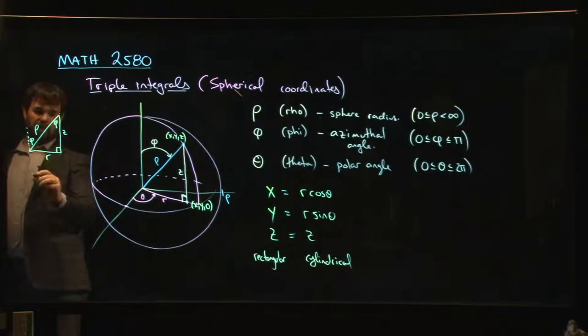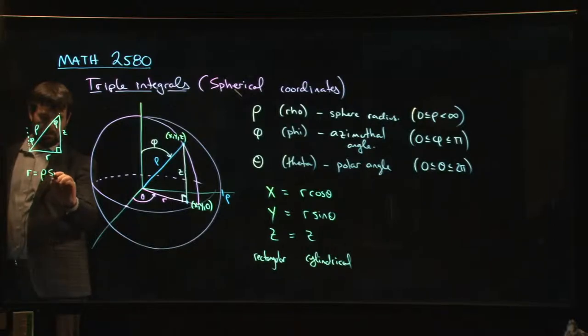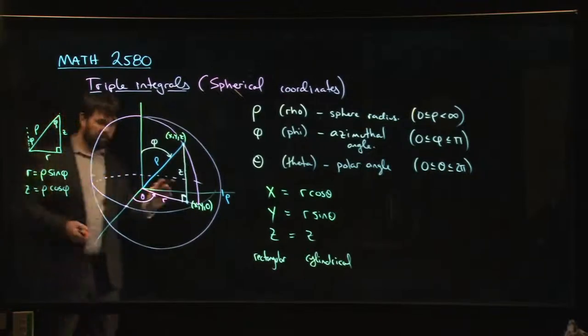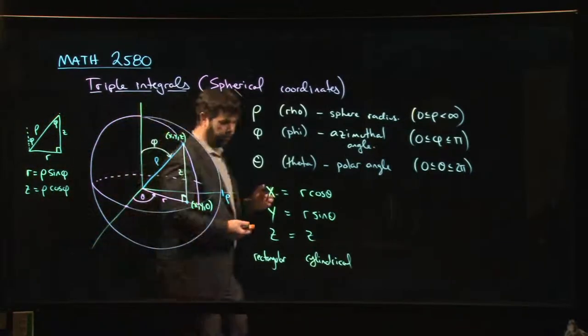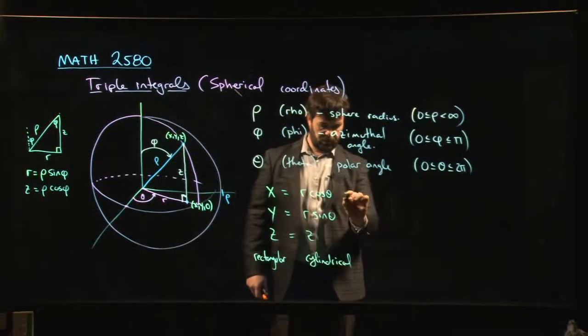R is opposite that angle. So, I know that r is rho sine phi, and z is adjacent. So, z is rho cos phi. And so, if I plug those in, I've got spherical coordinates.